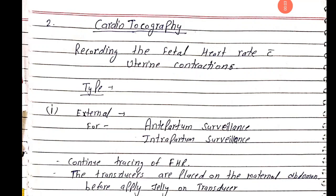Hello everyone. Today's topic is Cardiotocography (CTG), which records the fetal heart rate along with uterine contractions during pregnancy. There are two types of CTG: first, external, and second, internal. External CTG is used for antepartum surveillance and intrapartum surveillance — during pregnancy and during labor — to assess fetal heart rate and uterine contractions.